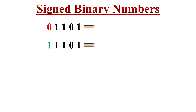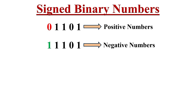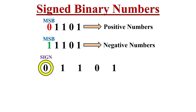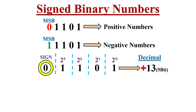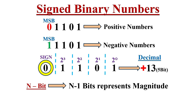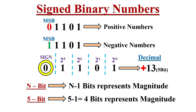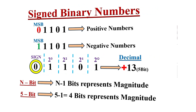By using signed binary numbers, we can represent both positive and negative numbers. The MSB or most significant bit is the sign bit. For example, in a 5-bit signed binary number 01101, the MSB bit 0 is the sign bit and the remaining bits represent the magnitude, so this represents plus 13. For an n-bit signed binary number, the MSB is the sign bit and the remaining n minus 1 bits represent the magnitude.